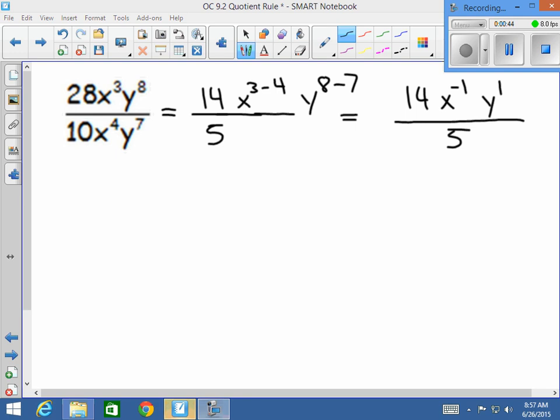Remember, anytime you have a negative exponent, we circle it and move it to the denominator. So I get 14y to the 1st all over 5x to the 1st. And that would be your final answer.